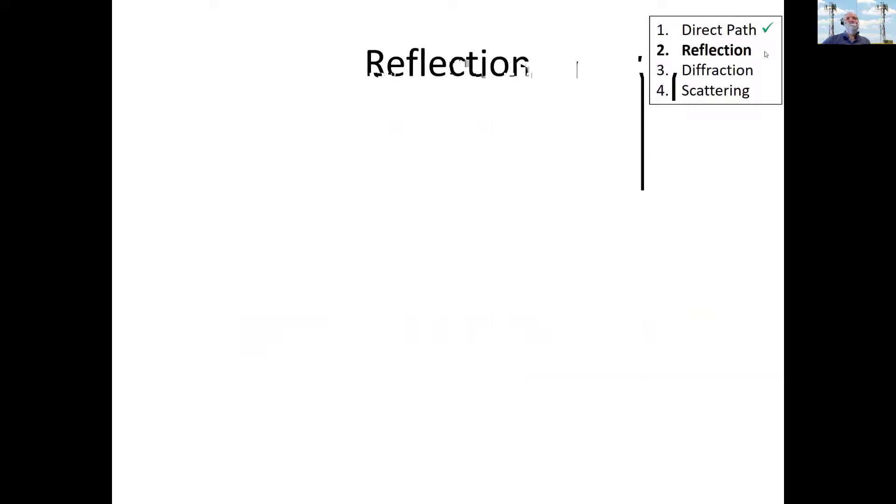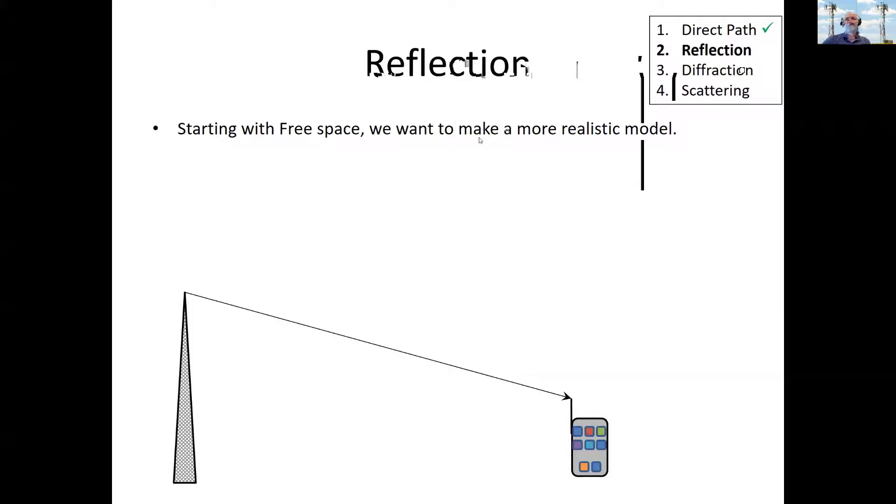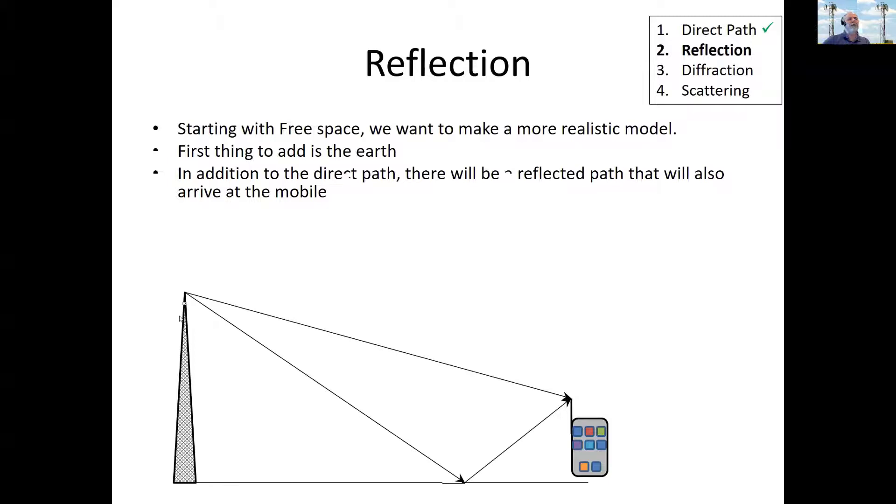Now, let's briefly look at reflection, diffraction, and scattering. Well, if you're going to try and make your model more realistic, the first thing you need to do is move to Earth. And if you move to Earth, you add the Earth. There's the Earth in my little diagram here. And now, in addition to the direct path, you get a bounce path. The bounce path is going to be a little bit longer than the direct path.